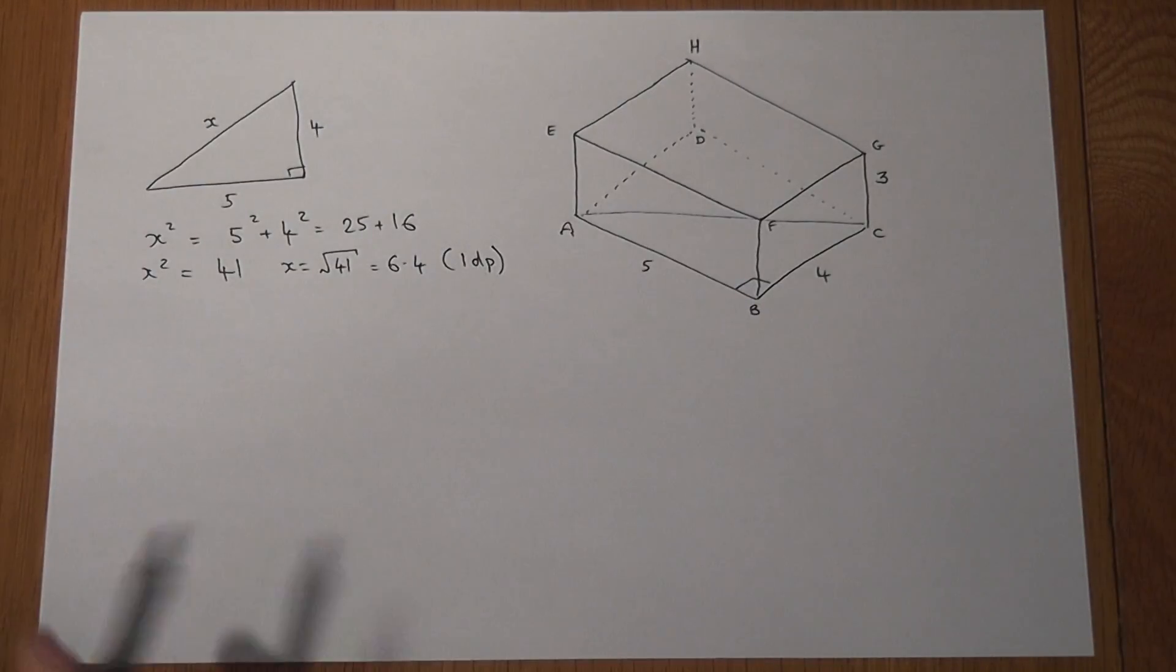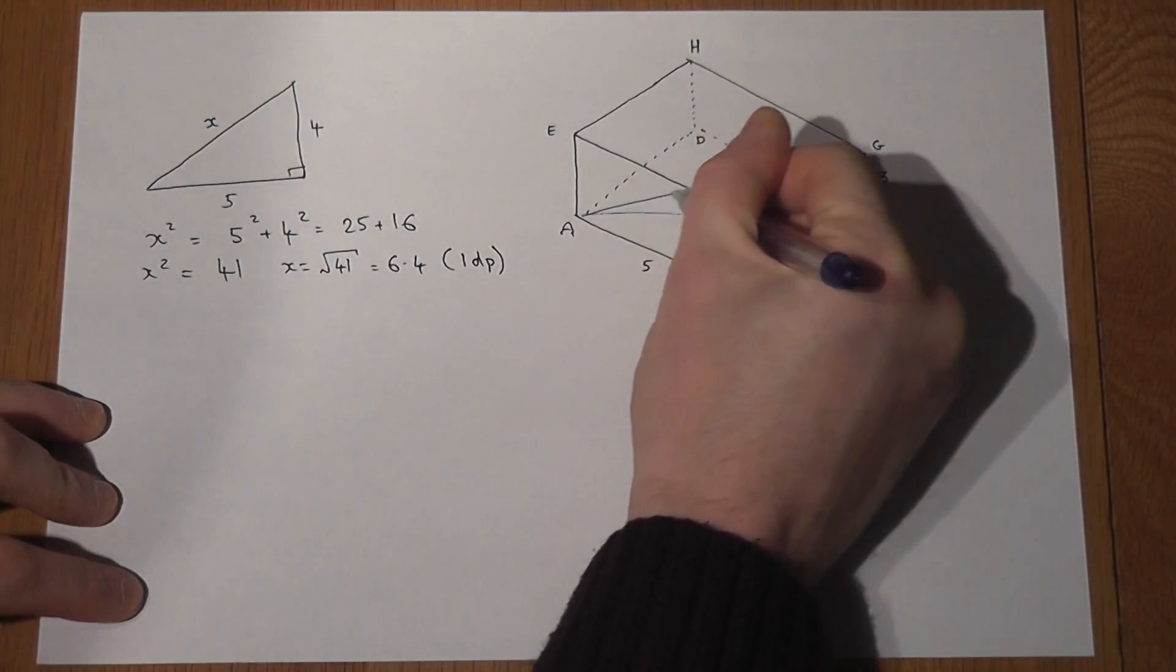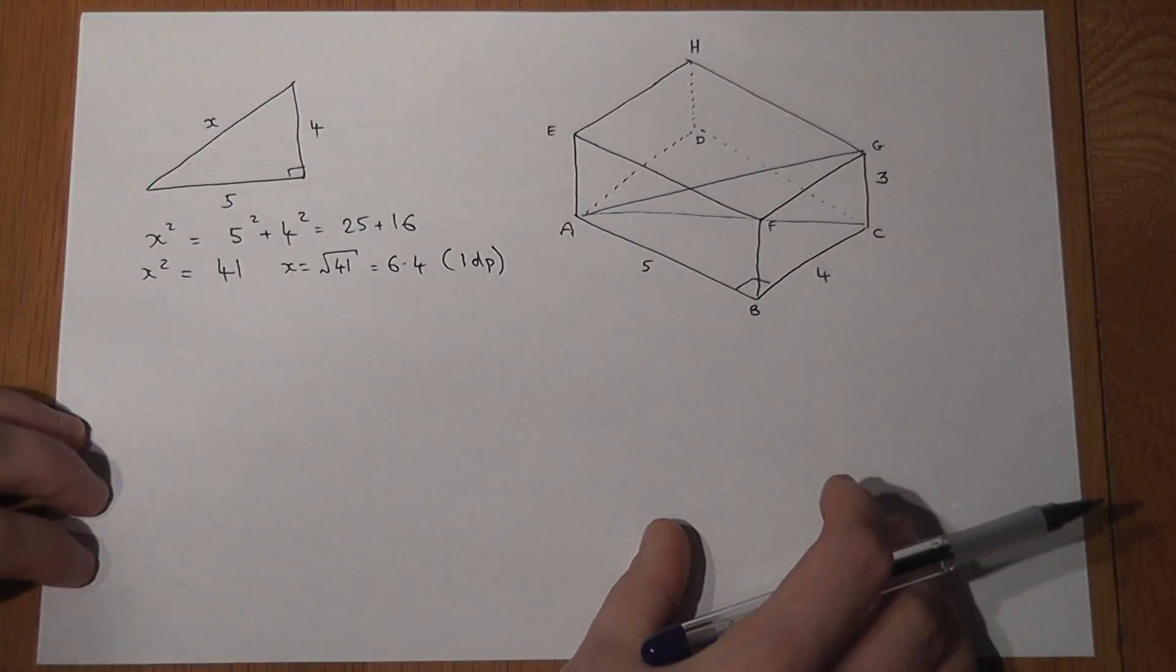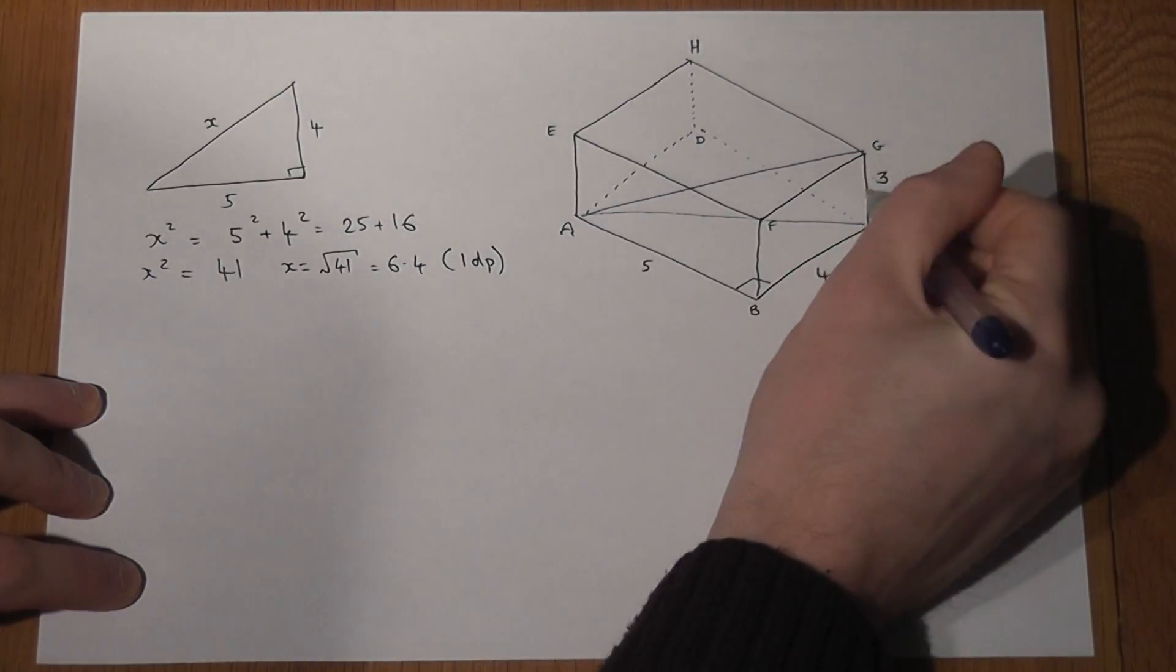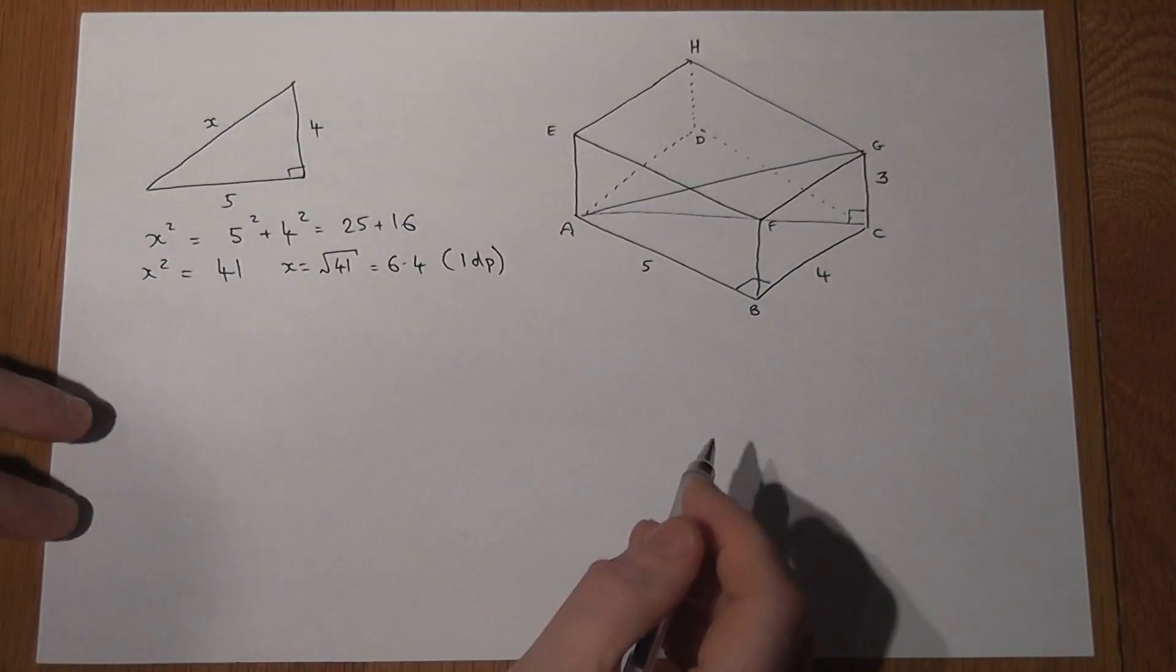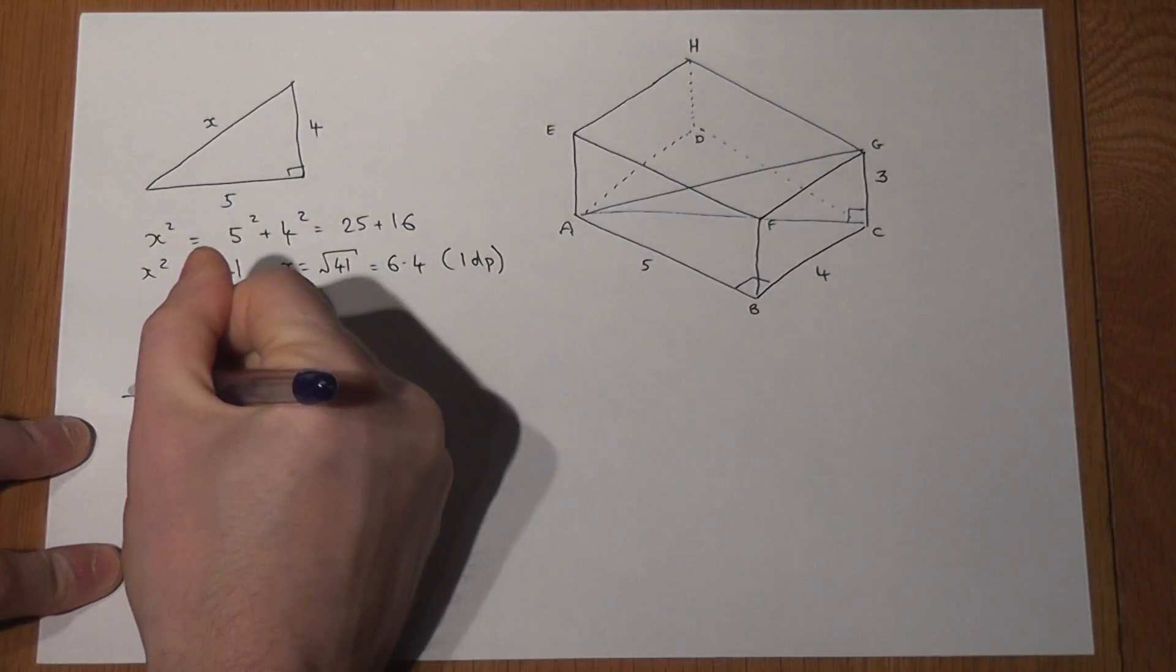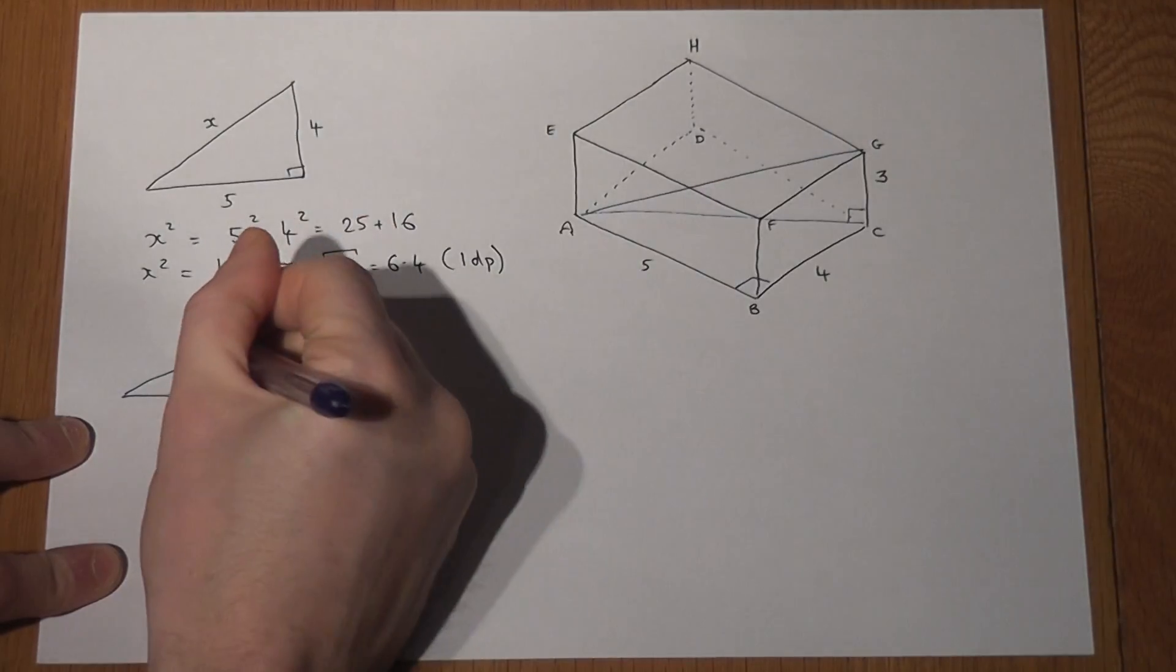Now the next length you might be asked to find is the length from A to G, and this can be called the leading diagonal, and the key thing here is to see this right angled triangle here within the shape. So we've got the length from A to C, the height of the shape, and this length here which we want to find, which I'll call Y.